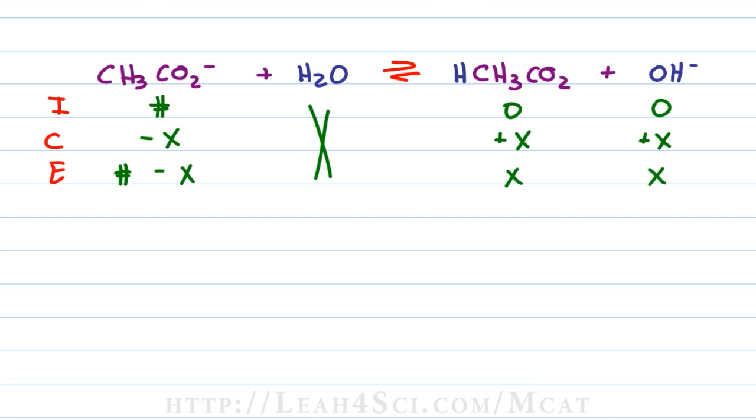We're not going to go nuts solving this because remember the shortcut I showed you. In this case, it's a base so we'll write it as Kb for our equilibrium expression is equal to x squared representing acetic acid and hydroxide divided by molarity initial because we're estimating that this is negligible and therefore drops out.